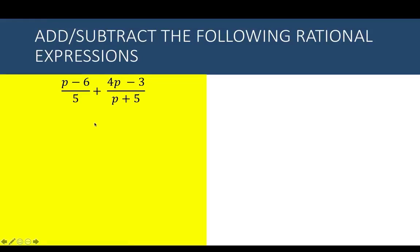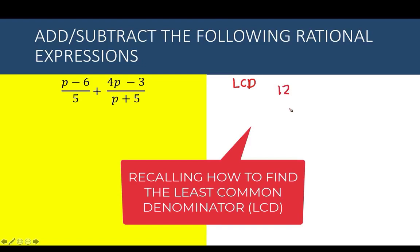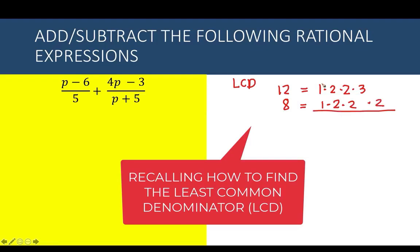Let's have another example: p minus 6 over 5 plus 4p minus 3 over p plus 5. Check the denominators — you have 5 and p plus 5, which are different, so we need to find the LCD. Recall how to find the LCD: for numbers like 12 and 8, you use prime factorization — rewriting 12 as 1 × 2 × 2 × 3, and 8 as 1 × 2 × 2 × 2 — then bring down each unique factor to get the LCD of 24.